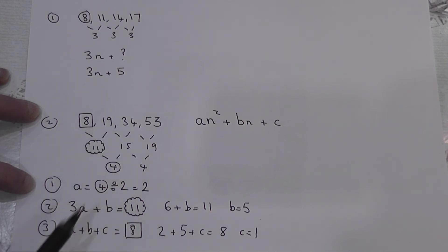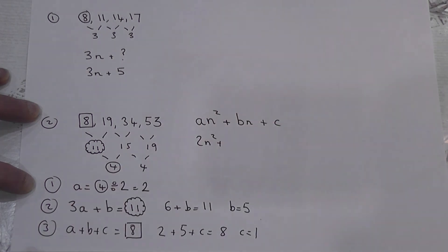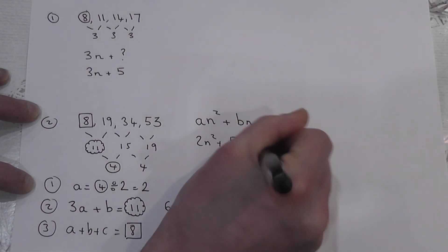So the nth term for this quadratic sequence is 2n² + 5n + 1.